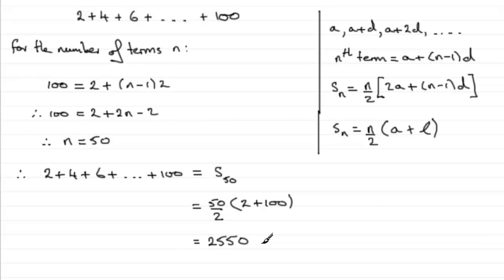As I said before, try verifying this using the other formula: S_50 equals 50 over 2, multiplied by 2 times the first term (2), plus 49 times the common difference (2). You should find you still come out with the same answer of 2550.